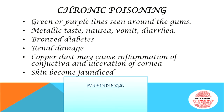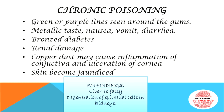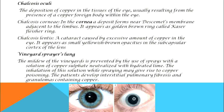Post-mortem findings of chronic poisoning: the liver is fatty and there is degeneration of epithelial cells in the kidneys. There are also important specific terms related to chronic copper poisoning.